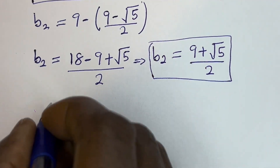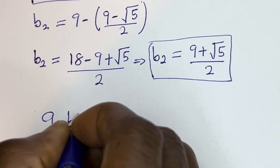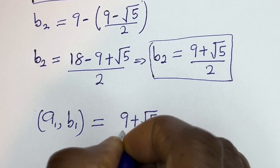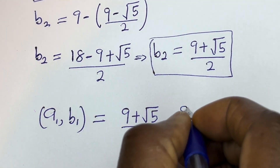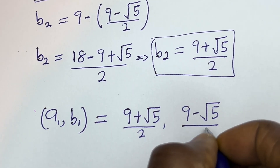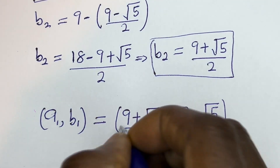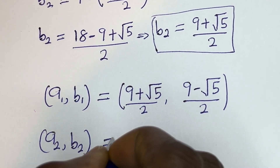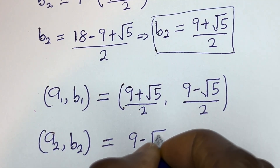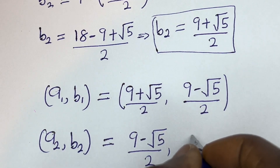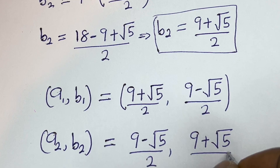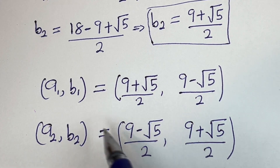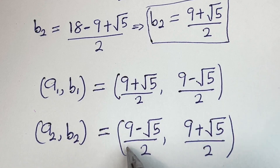Therefore, our final answer is: A1, B1 equals ((9 plus square root of 5) divided by 2, (9 minus square root of 5) divided by 2). And A2, B2 equals ((9 minus square root of 5) divided by 2, (9 plus square root of 5) divided by 2). You can see from this solution that the value of A1 equals the value of B2, and the value of B1 equals the value of A2. I hope you enjoyed the video.